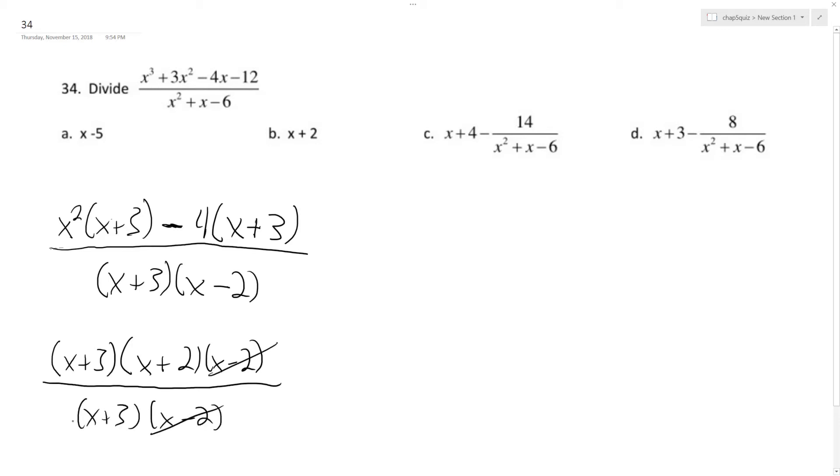x minus 2 is canceled out. And we're left simply with x plus 2. And that's what we get for B.